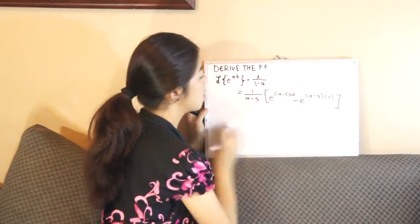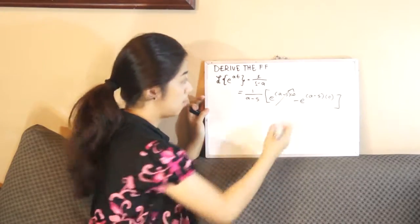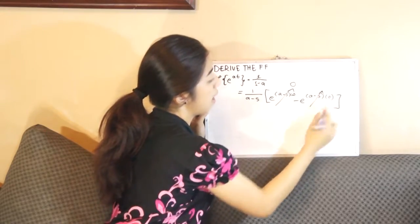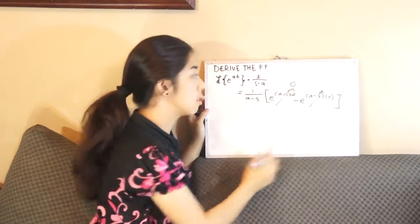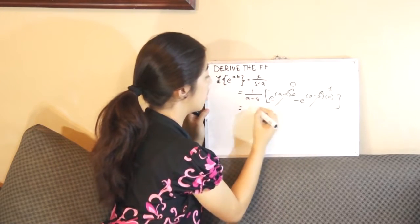This approximately will be 0. We already know that part. Now we have e raised to 0 is equivalent to 1, so we have a negative 1 on this side.